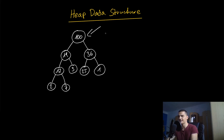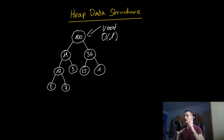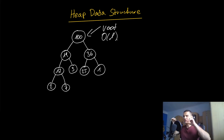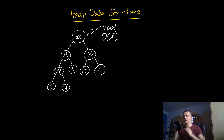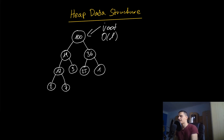In a max heap, what we always have at the root is the largest element, and the root node can be accessed in constant time since it's always at the same address. If the heap property is satisfied, the root node will always be the largest element. So if the largest value equals the highest priority, the element that needs to be dequeued next is always at the root node — we can just pop it out.